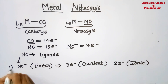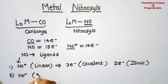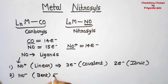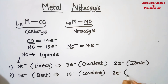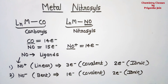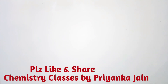In the bent binding mode, when NO is acting as NO⁻, it will be bent and it will act as a 1-electron donor in the covalent model and as a 2-electron donor in the ionic model. We can understand all these concepts of the binding modes of metal nitrosyls with the help of orbital diagrams.